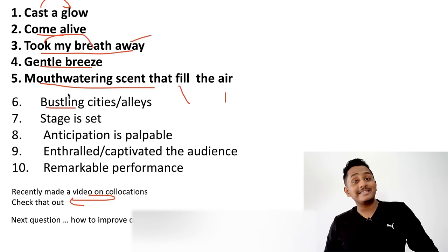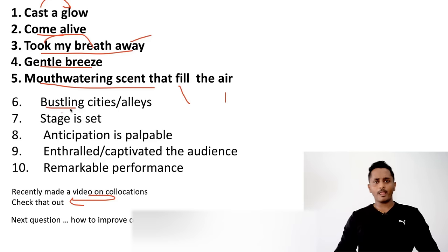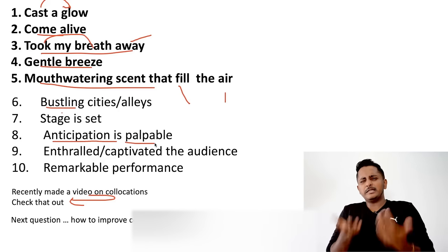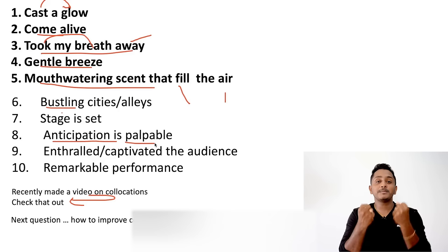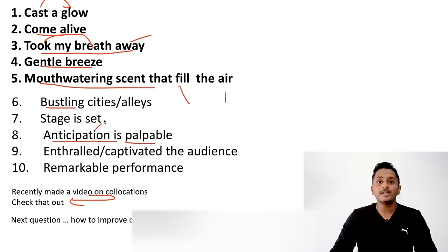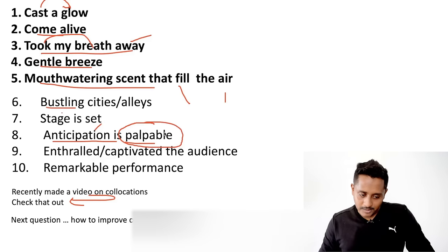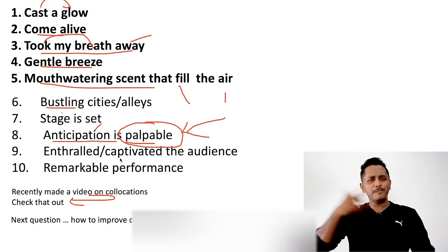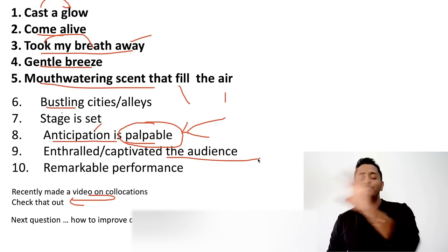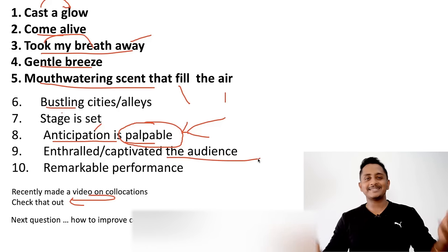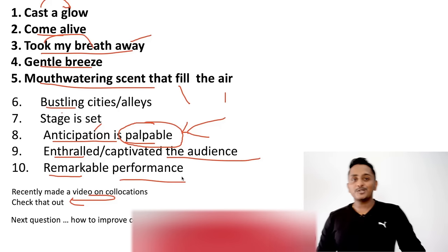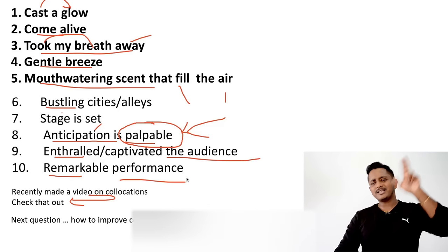'Gentle breeze' is a collocation. 'Mouth-watering scent that fills the air.' 'Bustling cities,' 'bustling streets' means busy or crowded streets. 'The stage is all set.' 'Anticipation is palpable' means the intensity or curiosity is high — anticipation, excitement, and energetic scenarios all go with 'palpable.' 'Enthralled' means captivated or impressed. 'Remarkable performance' versus 'poor performance' — these are collocations.